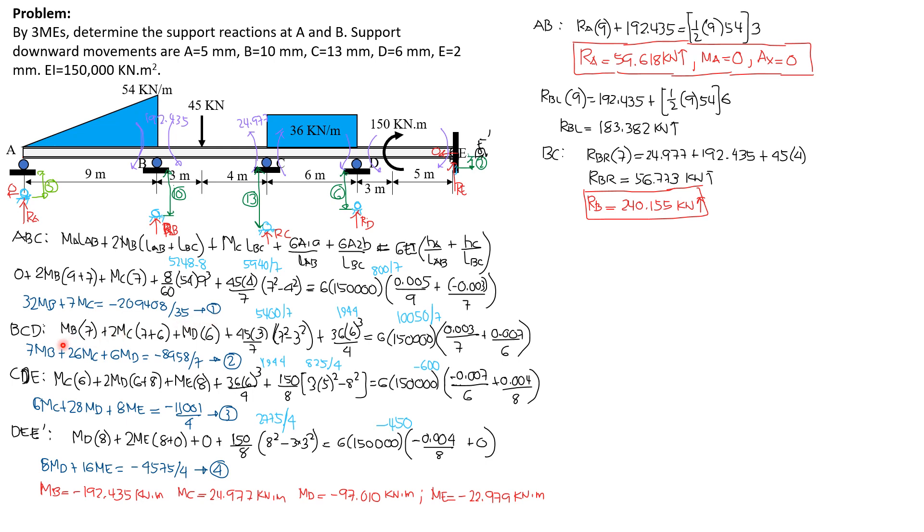Then, for BCD, we write 3 moment equations on BCD, so we have MB times length of BC plus 2 times MC, quantity length of BC 7 plus length of CD 6. 6 area 1A over L1 for this load, with respect to the left, PA over L, quantity L square minus A square, where P is 45, A this time is 3 meters, which is this, and the value is 5400 over 7.